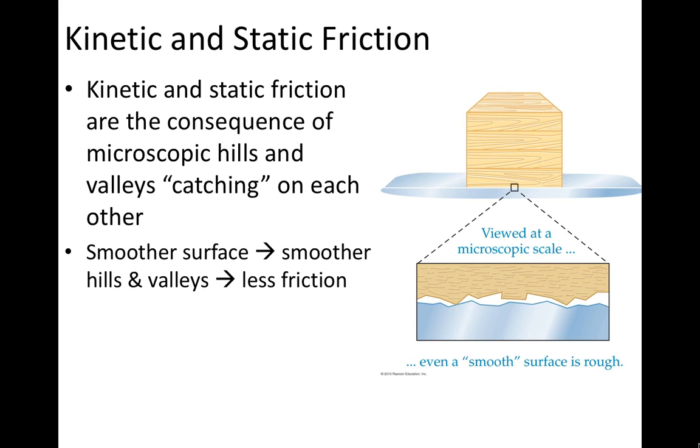So if you think about two surfaces that have very little friction, maybe like a waxed ski on snow or an ice skate on a sheet of ice, they have very smooth surfaces. And so there's very little friction, where something like sandpaper that's very rough, that has very large hills and valleys, that's going to cause lots of friction with most surfaces.